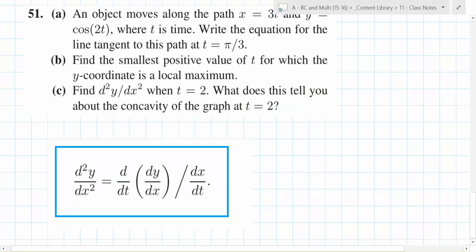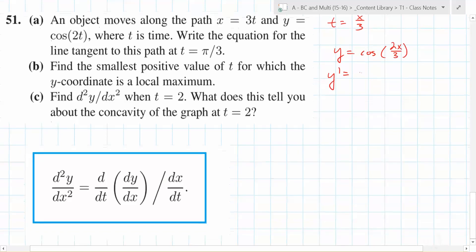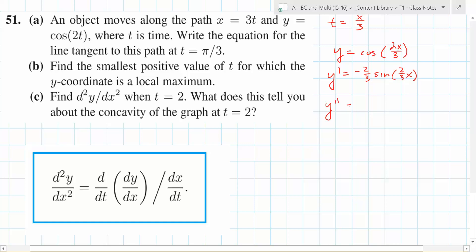If you look at the Cartesian method, you know that t is equal to x over 3. So we know that y is equal to cosine of what? 2x over 3. So what does y prime equal? Negative 2 thirds sine of what? 2 thirds x like that. So what does y double prime equal? Negative 4 over 9. Cosine of what?